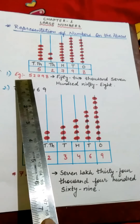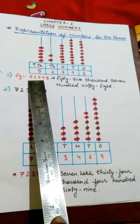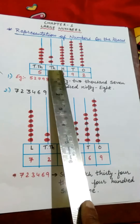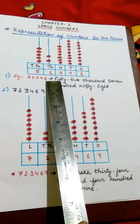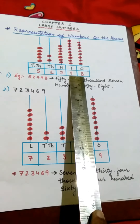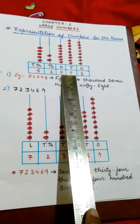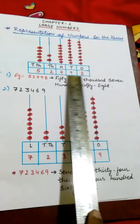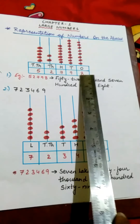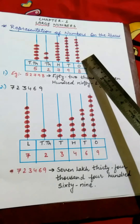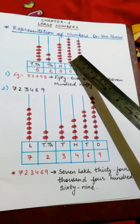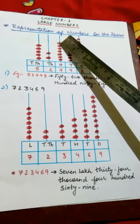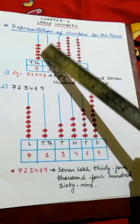The number is 552,798. This is an abacus having a 1s place, 10s place, 100s place, 1000s place, and 10,000s place. You can see 8 is in the 1s place, so I will put 8 here. 9 is in the 10s place, 7 is in the 100s place, 2 is in the 1000s place, and 5 is in the 10,000s place. I will put this in the place value chart and make the beads accordingly: 8 beads in the 1s place, 9 beads in the 10s place, 7 beads in the 100s place, 2 beads in the 1000s place, and 5 beads in the 10,000s place.